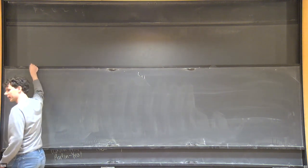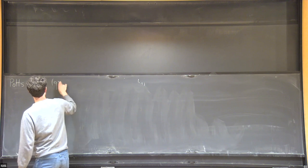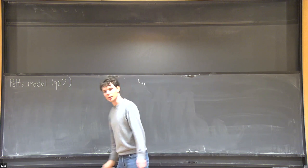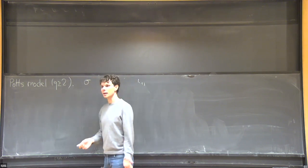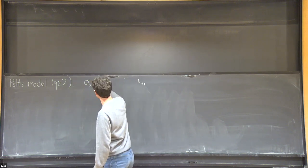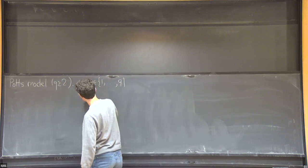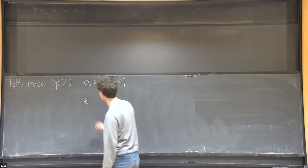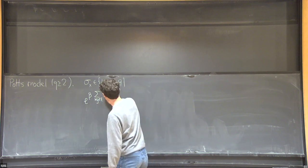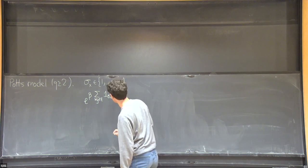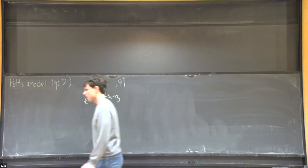I think it's instructive to make the analogy with the Potts model. The Potts model, defined for an integer Q which is two, three, four, and so on, is a model where there is a color sigma associated to every vertex of the graph, where sigma_x takes values in 1 to Q. The Gibbs distribution of the Potts model is given by the exponential of beta times the sum over all edges of the indicator that the two colors at neighboring vertices are the same, with respect to the counting measure on all configurations.